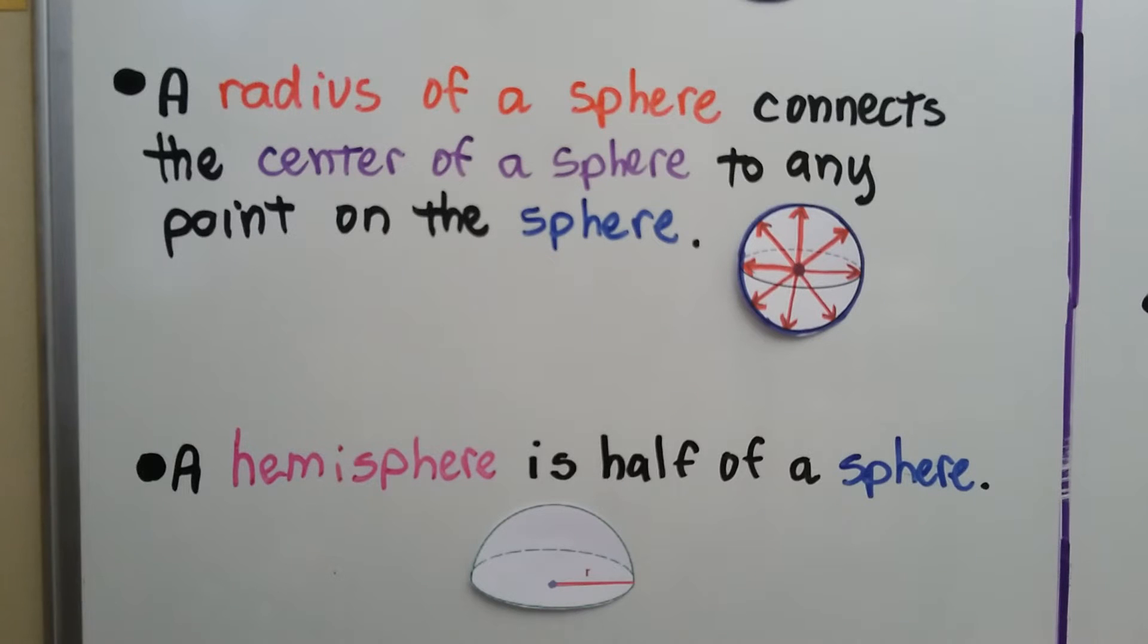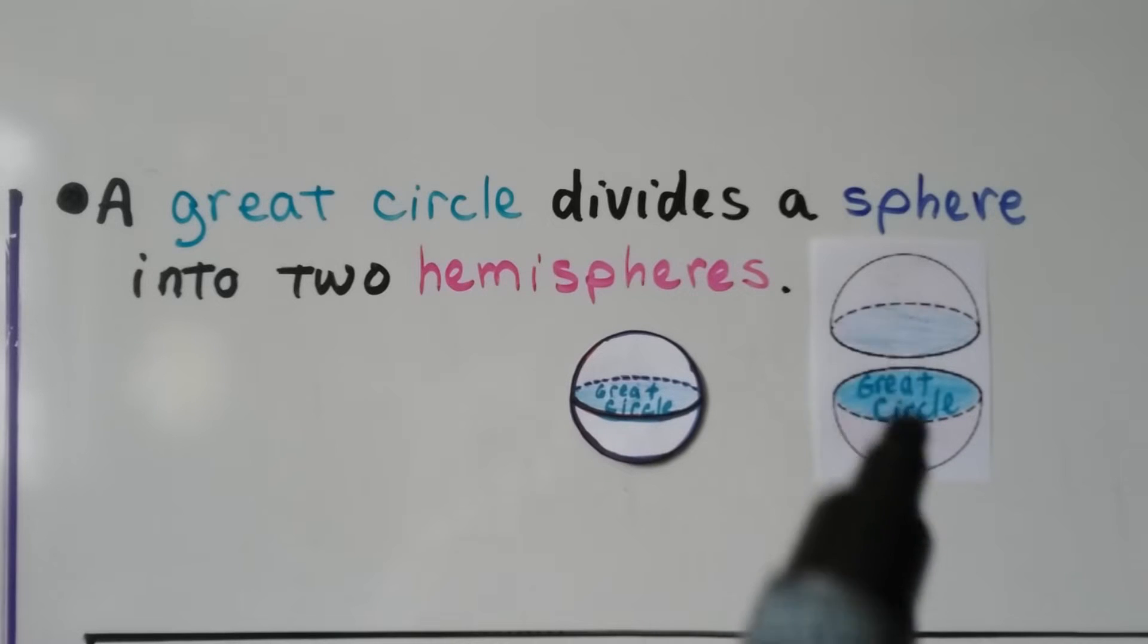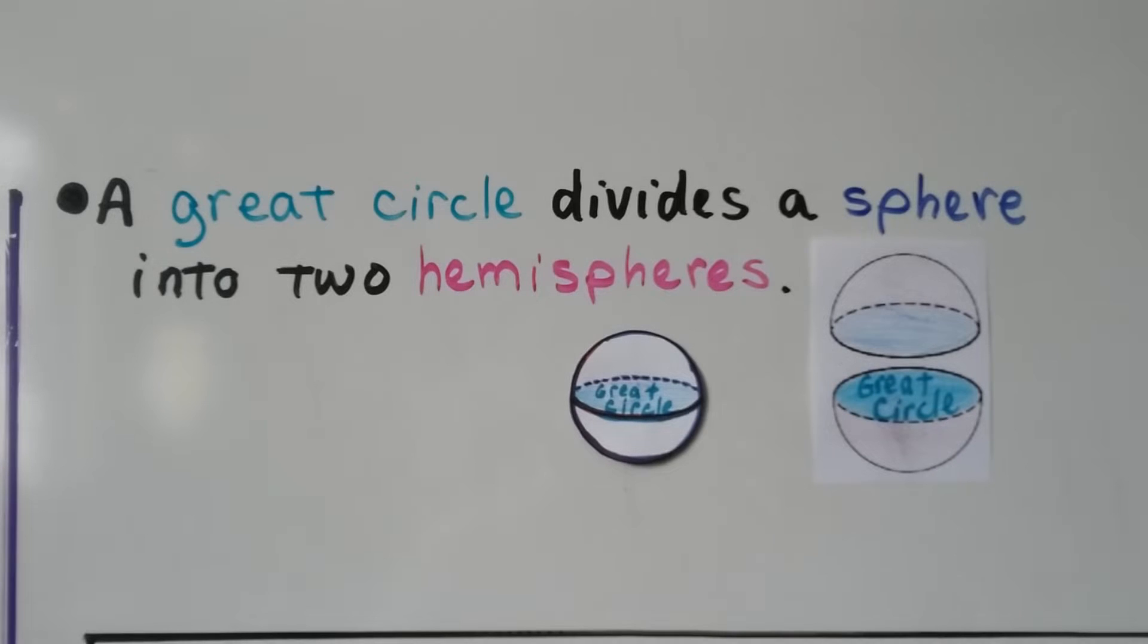And a hemisphere is half of a sphere. A great circle divides a sphere into two hemispheres. So right here, this is the great circle, and it divides our sphere into two hemispheres.